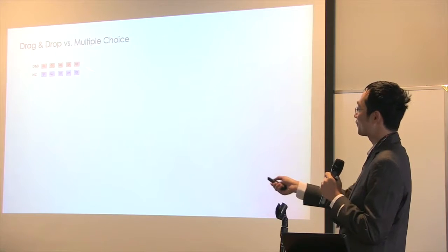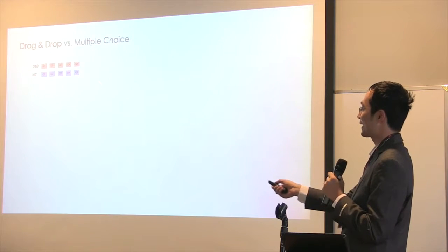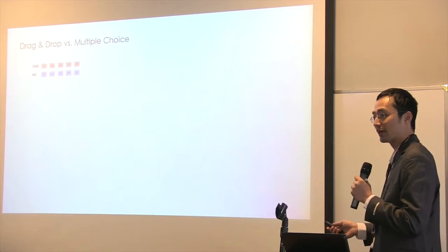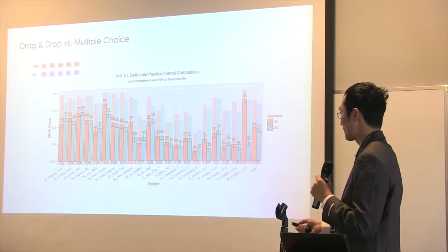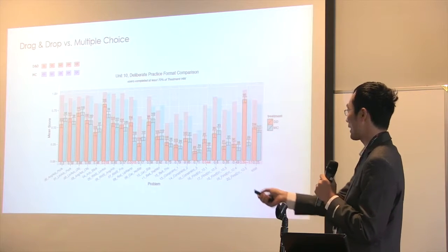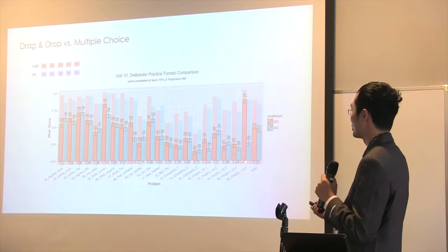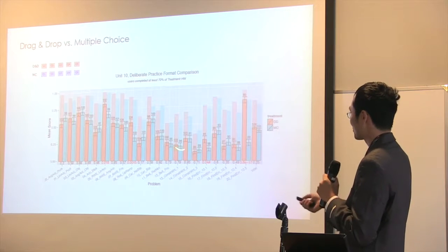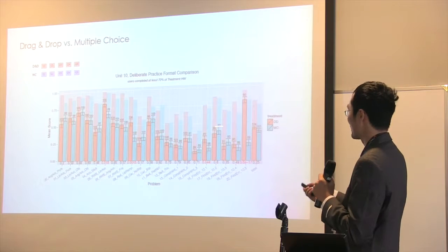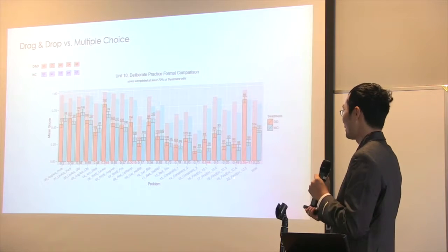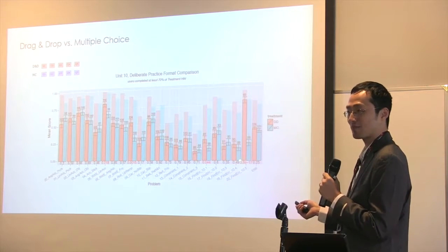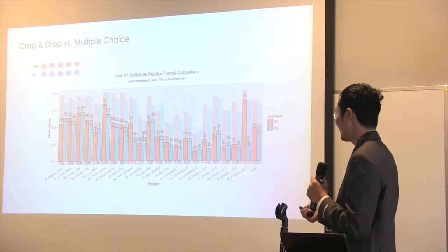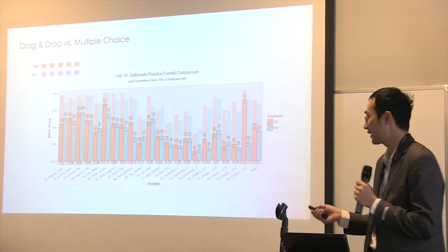For the results, I first wanted to see if the drag-and-drop format is better than multiple choice for developing individual skills. When I saw the data, it showed all the deliberate practice problems used in one unit — the first attempt correct rate in front and the final correct rate in back. The point of this graph is to show the messiness of MOOC data and how lacking in pattern it is.